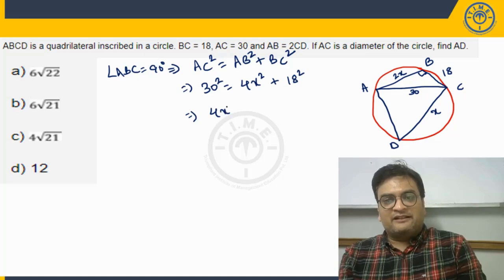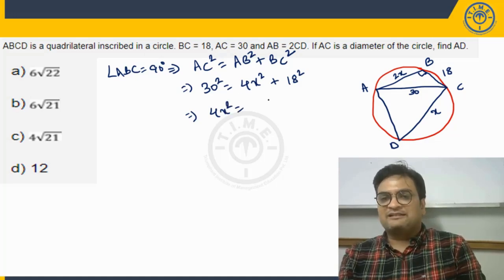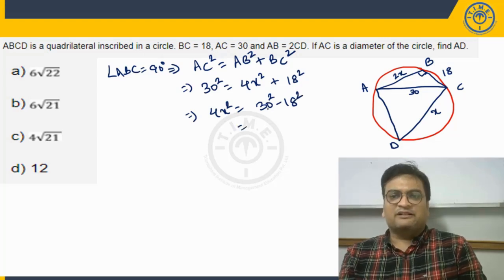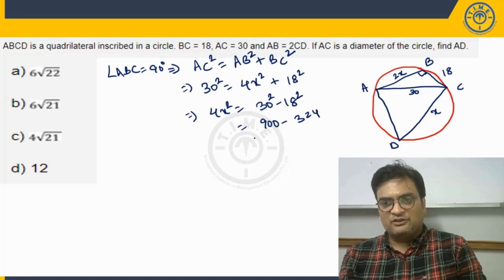So 4x square, let us bring all the terms on one side, 30 square minus 18 square. So this is what, this is 900 minus 324. So this is going to be 576.